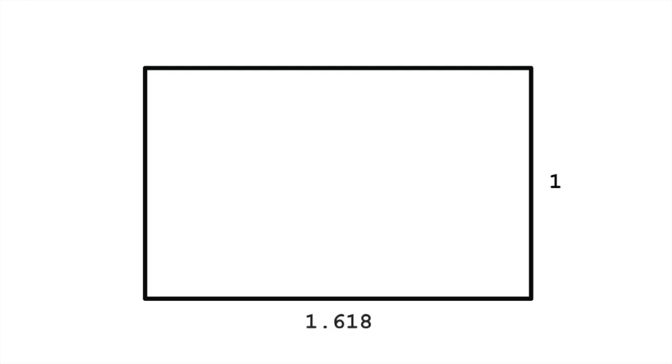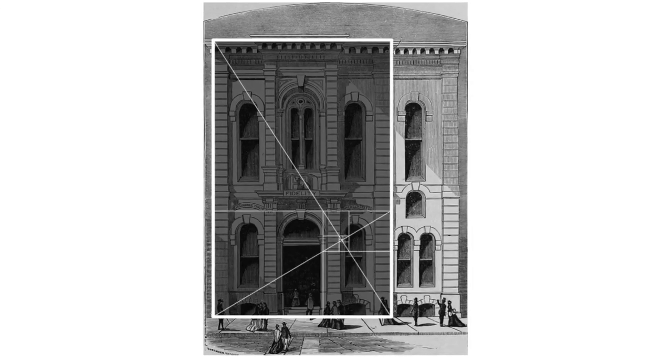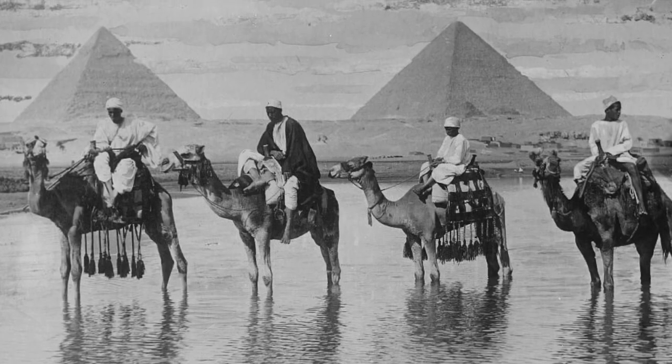In geometric terms, if a rectangle is drawn with one side equal to one and its perpendicular represented as 1.618, a desirable shape emerges. In 1876, Gustav Fechner did a study that determined people visually preferred this shape to other rectangles. It's thought that the ratio may have been used as early as the Egyptians.